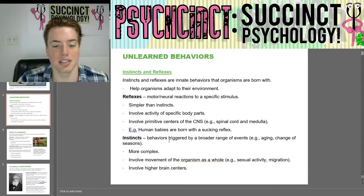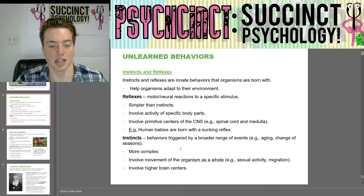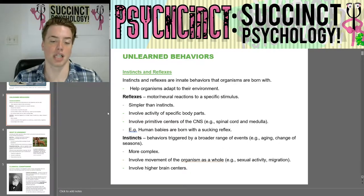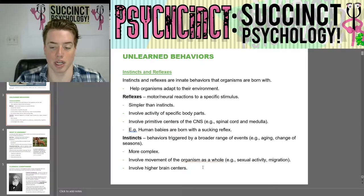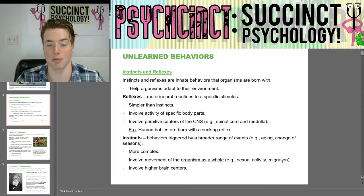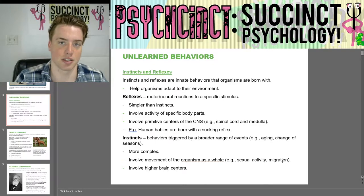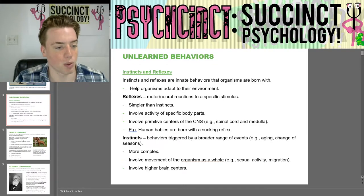Instinct is behavior triggered by a broader range of events, such as aging or change of seasons. These are more complex and involve movement of the organism as a whole — like sexual activity and migration — not just a single body part like reflexes. They also involve higher brain centers, so it requires a bit more brain power.